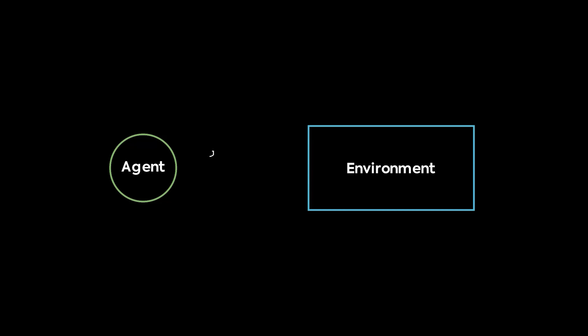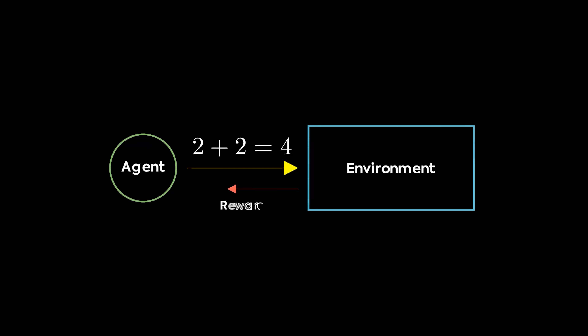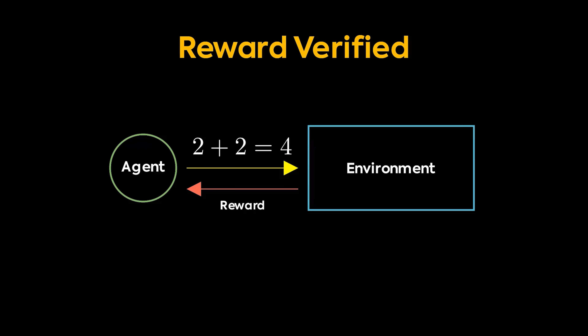And now we come to the next topic: verifiable rewards, which is incredibly important in the world of thinking models. This is the key aspect of what makes thinking models scale to be able to think. Verifiable rewards are reward signals that come from objectives that can be verified. Here's a simple example: two plus two equals four. If an AI predicts that two plus two equals four, we know that's true — so we can verify it. That is a verifiable reward.